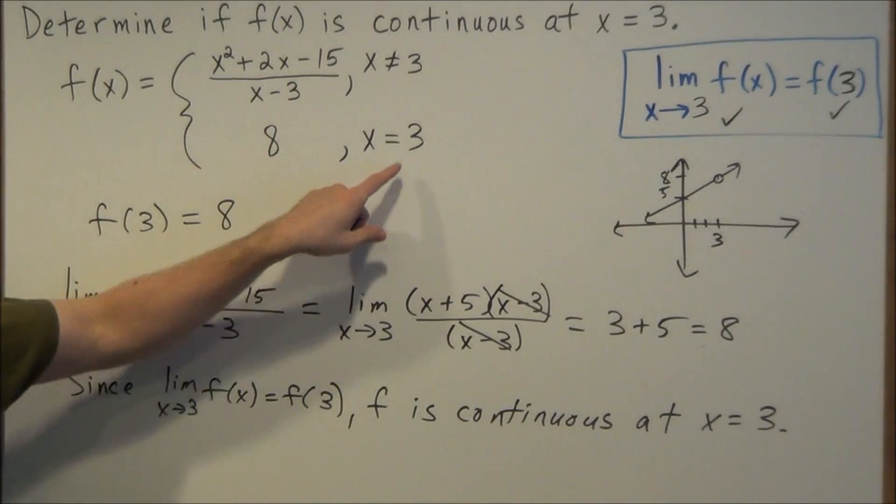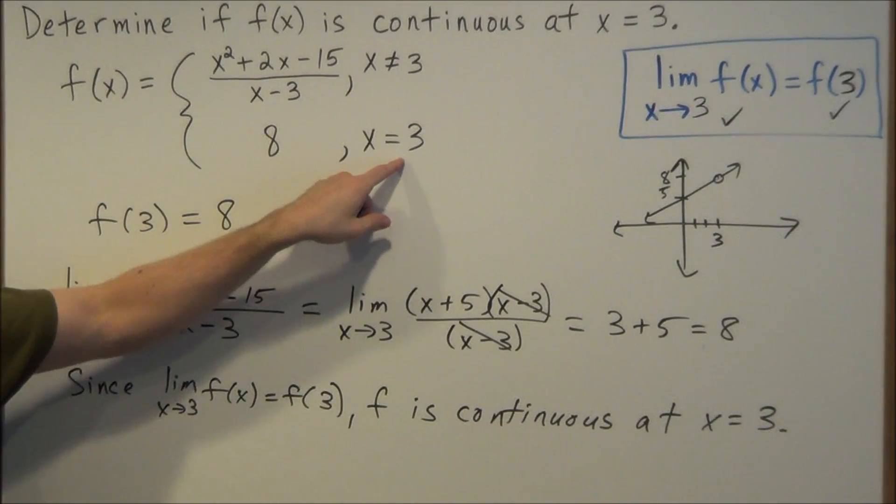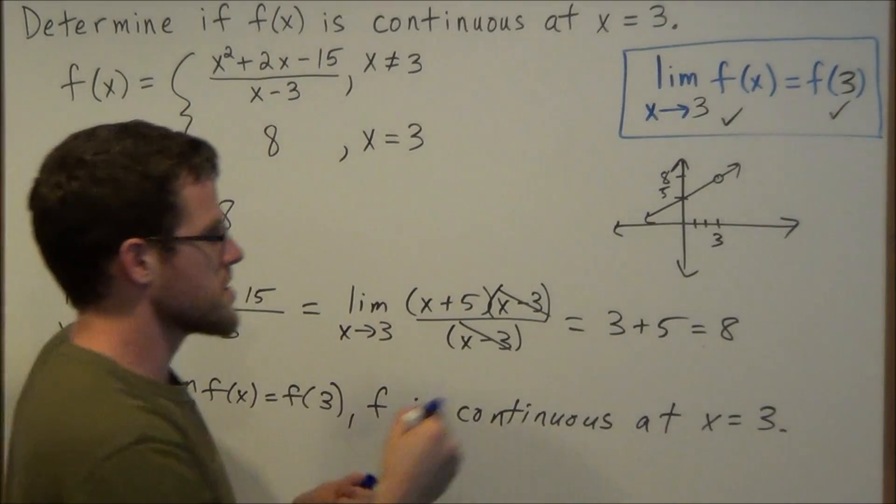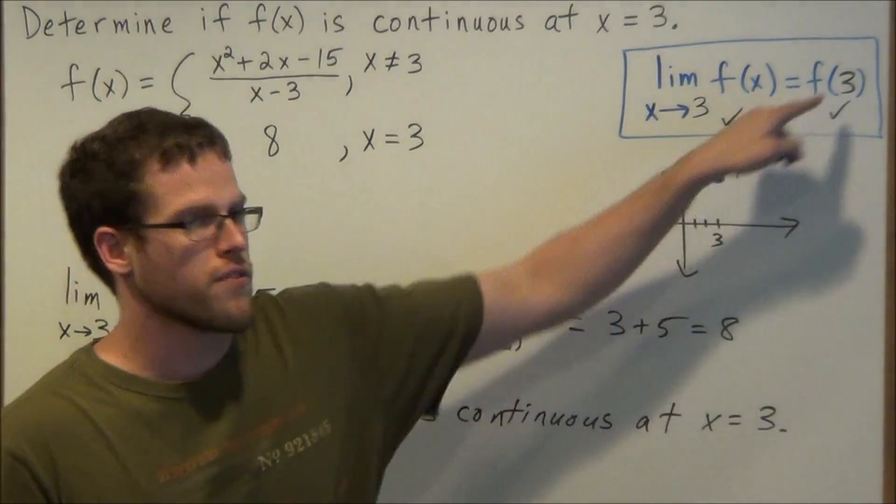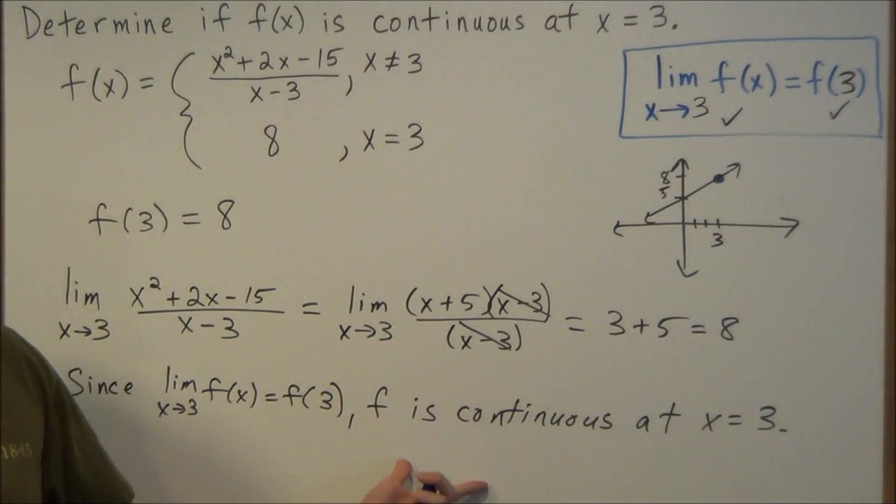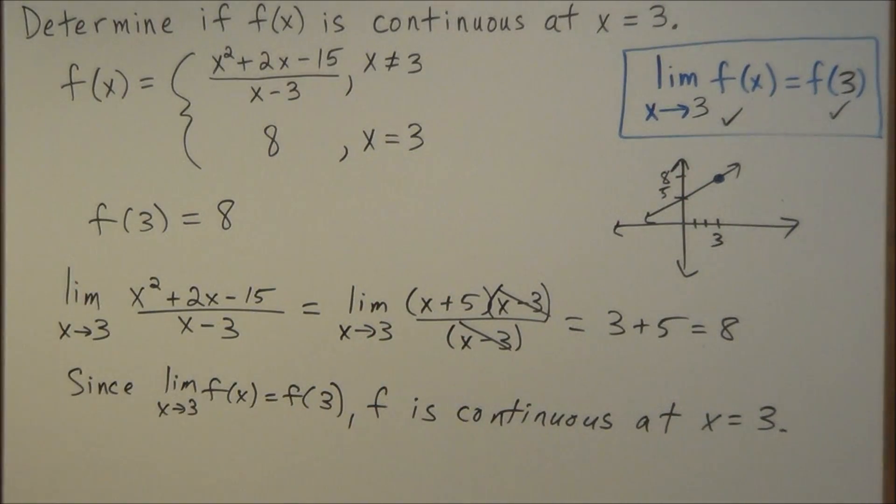So basically what we're showing here is that this point, 3 comma 8, essentially fills the hole here and makes the function continuous. That's what we established algebraically here for this particular problem.